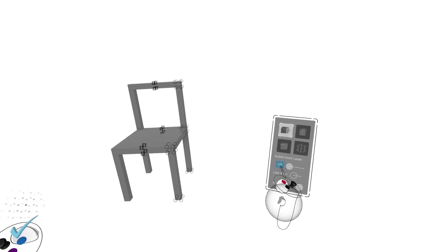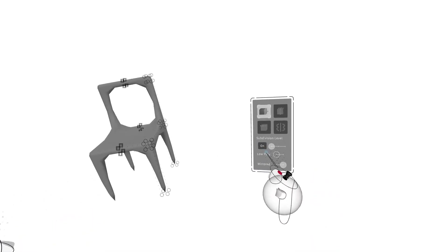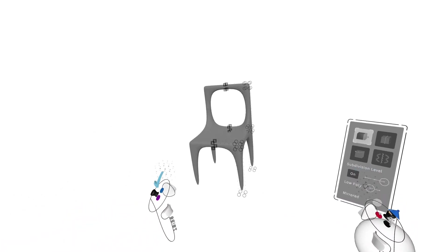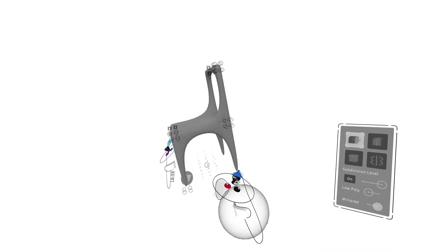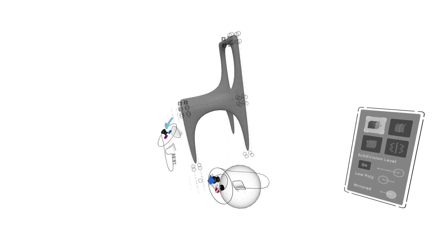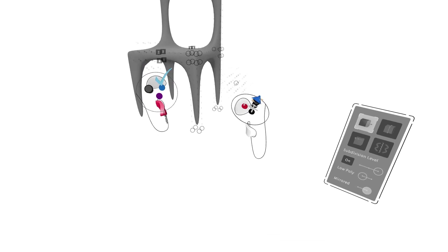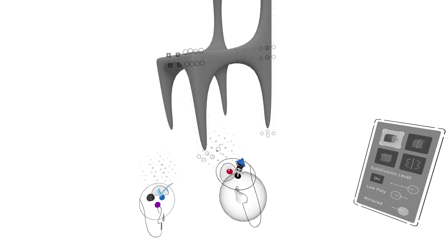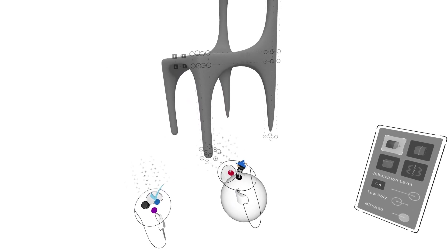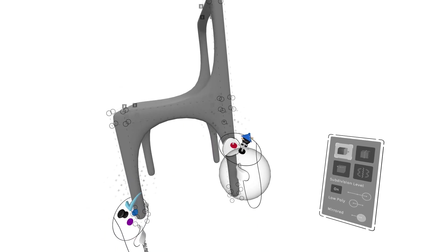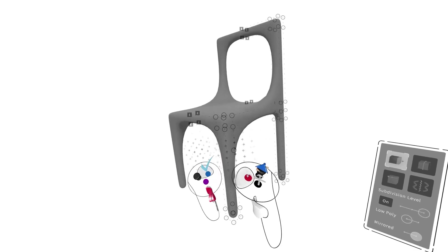We can quickly toggle into subdivided mode and turn subdividing and smoothing all the way up. You can see here that there's a lot of draft between the points, so one thing we're going to want to do is come over and add in a few more rows to tighten up the tension.